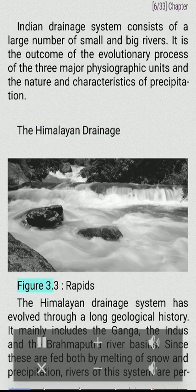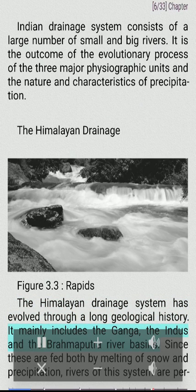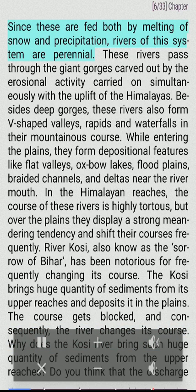The Himalayan drainage system has evolved through a long geological history. It mainly includes the Ganga, the Indus, and the Brahmaputra river basins. Since these are fed both by melting of snow and precipitation, rivers of this system are perennial.